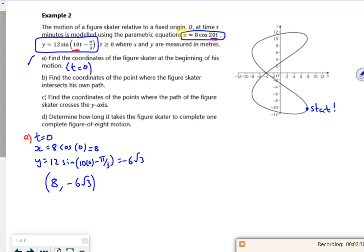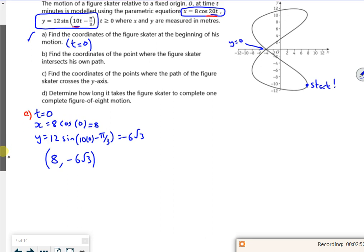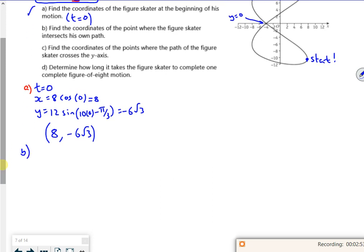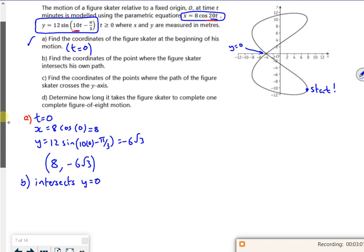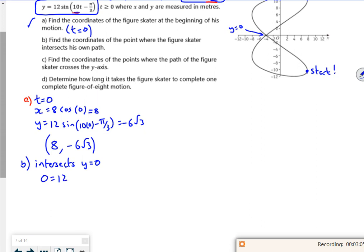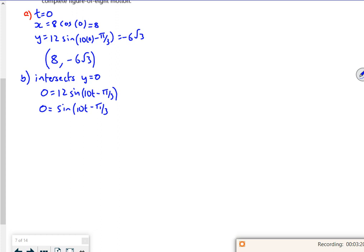So then it says find the coordinates at the point where the figure skaters intersect their own path. Now you can see that that's there, isn't it? When y is zero. So they cross when y is zero from the picture. So I'm going to use the picture. So what have I got? So I've got zero is 12 lots of sin, 10t minus pi by 3. So ditch the 12. We're going to do this proper trig. So if I do the inverse sine of zero, that's the same as 10t minus pi by 3. Now, where are we? So that's going to give out a zero.